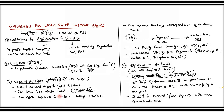The first guideline for registration and licensing is that एक payment bank register होता है as a public limited company under Companies Act 2013। Companies Act 2013 में आपने registration का process पढ़ा होगा कि company public limited या private limited किस तरह से बनती है — उसी process के accordingly payment bank की registration होगी। Licensing की बात करें तो payment bank को license मिलेगा under Banking Regulation Act 1949।